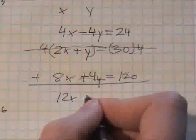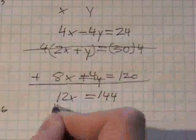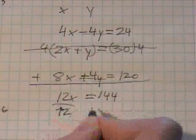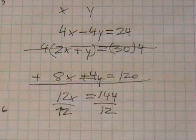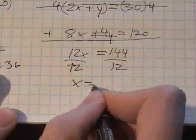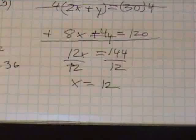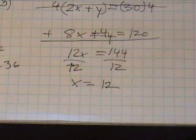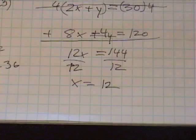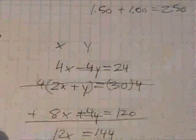This is going to be 12x. This here cancels out, and you have 144 here. So this here, it should come out to 12 for x. Okay, now that we figured out one of them, let's go ahead and plug it in to the top equation. So we're going to put 12 in for x.